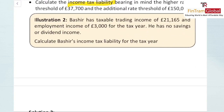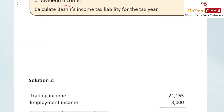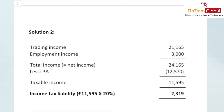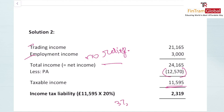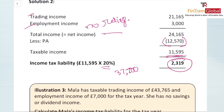Illustration: Bashir has taxable trading income of £21,165 and employment income of £3,000. He has no savings or dividend income. Total non-savings income is his net income. Since his income does not exceed £100,000, we deduct the full PA of £12,570 to get taxable income of £11,595. This is taxed at 20% (within the basic rate band), giving income tax liability of £2,319.